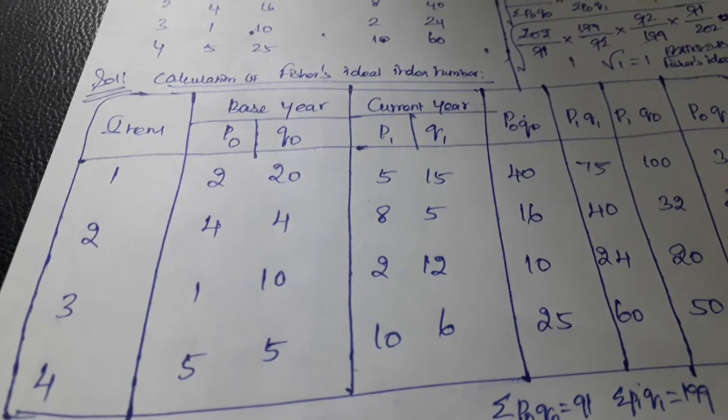So we need to find the quantity. If we divide the price from the total expenditure, we can get the quantity. For example, 2014 divided by 2 gives us 20. The P0 column is taken as given in the problem: 2, 4, 1, 5. Then for the Q0 column, we divide total expenditure by price to get the quantity.